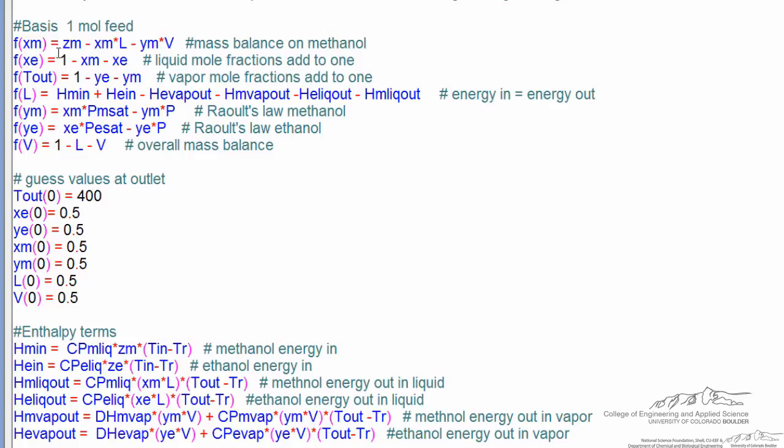And on the left side we use F for function, and in parentheses we indicate the variables we're solving for. So in this case we're solving for the mole fraction of methanol in the liquid phase, mole fraction of ethanol in the liquid phase, the outlet temperature, the amount of liquid, where a basis is one mole, and the amount of vapor. This says of course the moles add to one, and then the mole fractions of methanol in the vapor phase and the mole fractions of ethanol in the vapor phase.